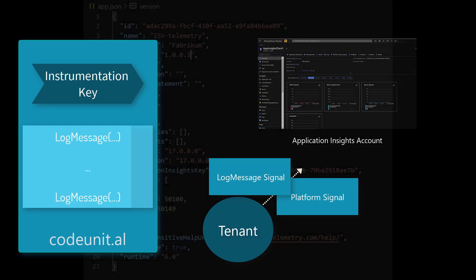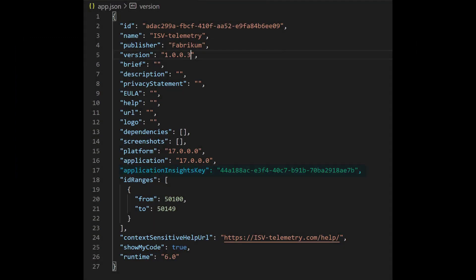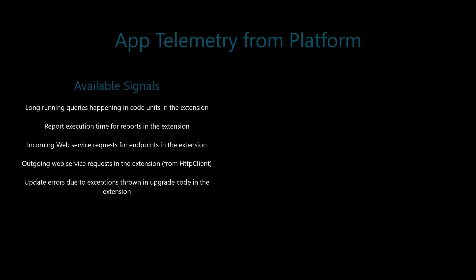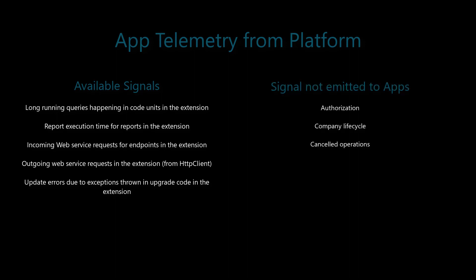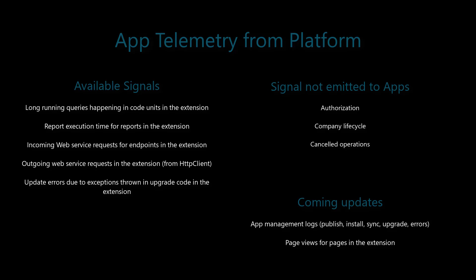Here's what that looks like in the app.json file. To sum it up, this release provides platform telemetry such as signals about long-running queries and reports. In future releases, we're planning to add additional signals about things like app management logs and page views.